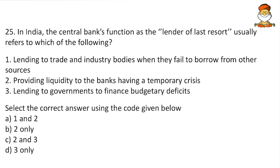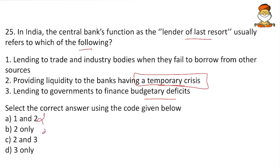In India, the central bank's function as the lender of last resort usually refers to which of the following: lending to trade and industry bodies when they fail to borrow from other sources; providing liquidity to banks having a temporary crisis; or lending to governments to finance budgetary deficits. The lender of last resort means someone who lends during crucial times when no one else helps. Banks approach RBI during a temporary crisis, but there are other credit agencies, so eliminate option two. Only option three is the answer.